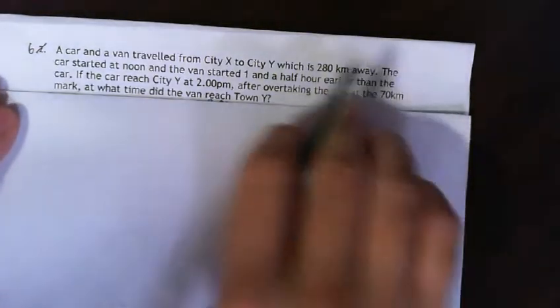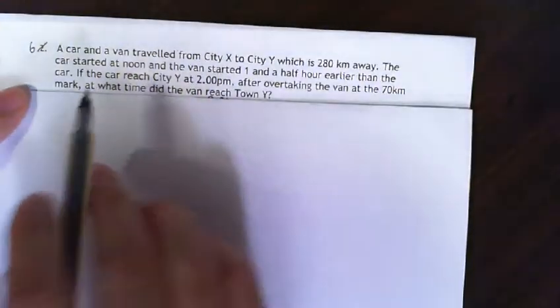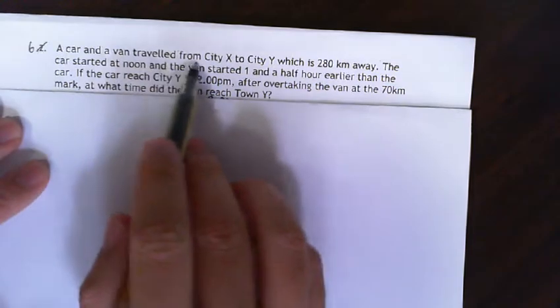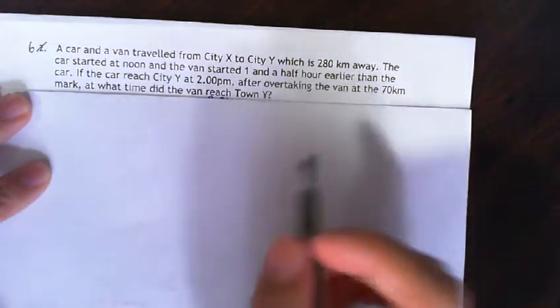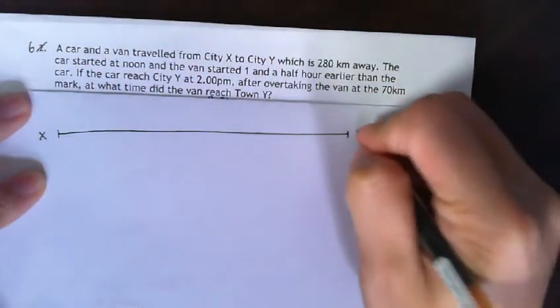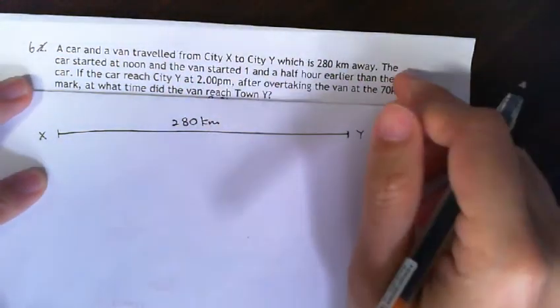Okay, this is our math set for question 6, quite a difficult question. So please, if you are not sure, replay the video again. A car and a van traveled from City X to City Y, which is 280 km away. So draw the distance timeline - this is X, this is Y, 280 km away.